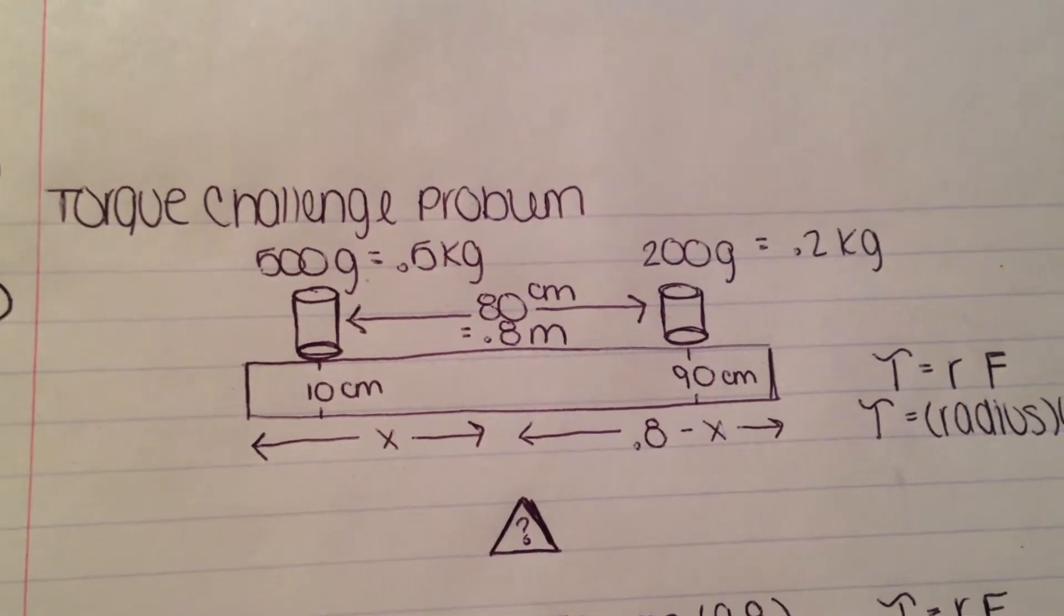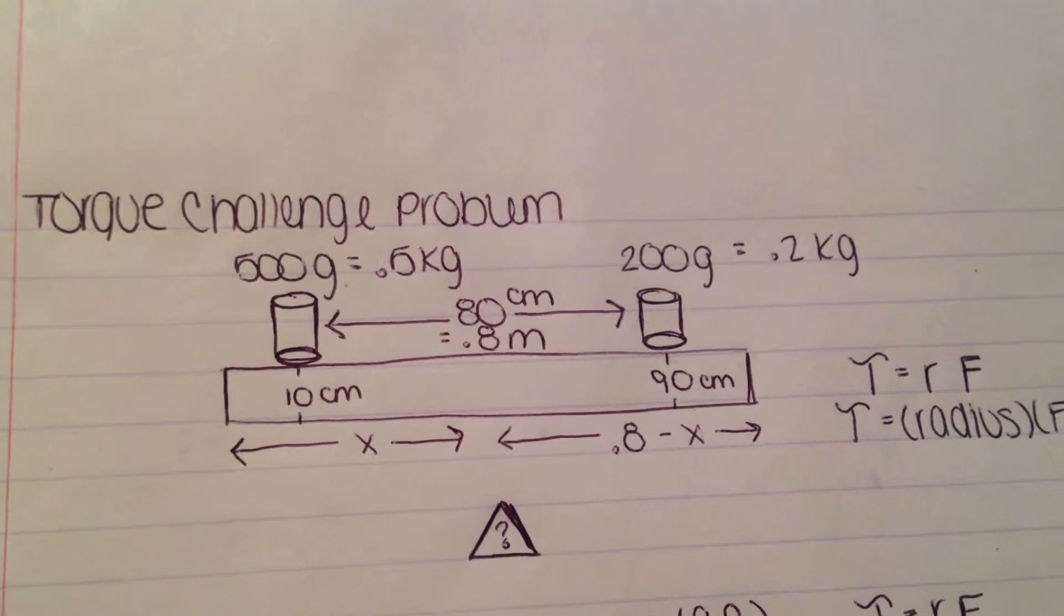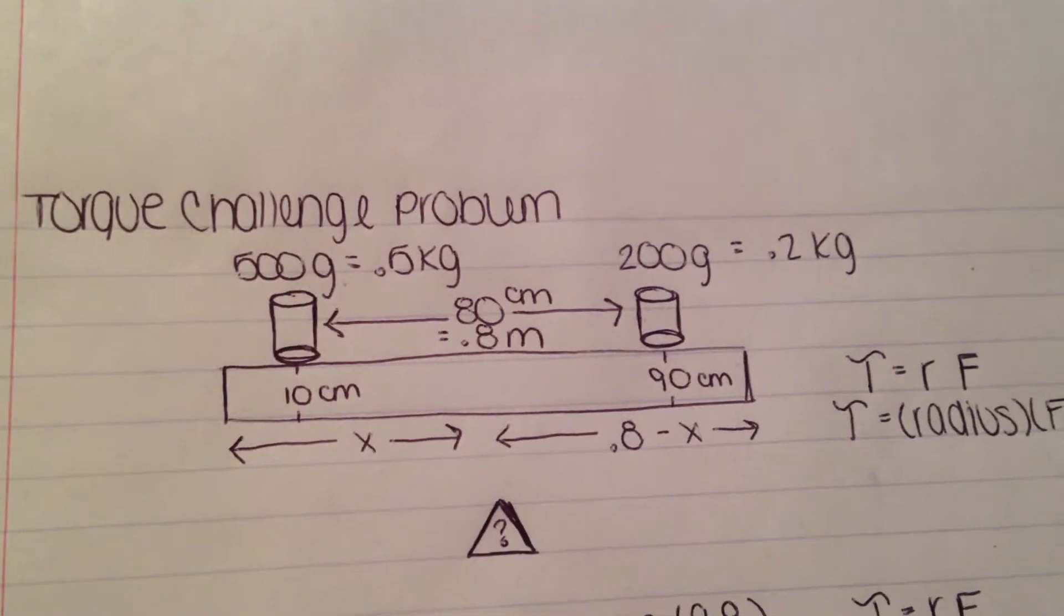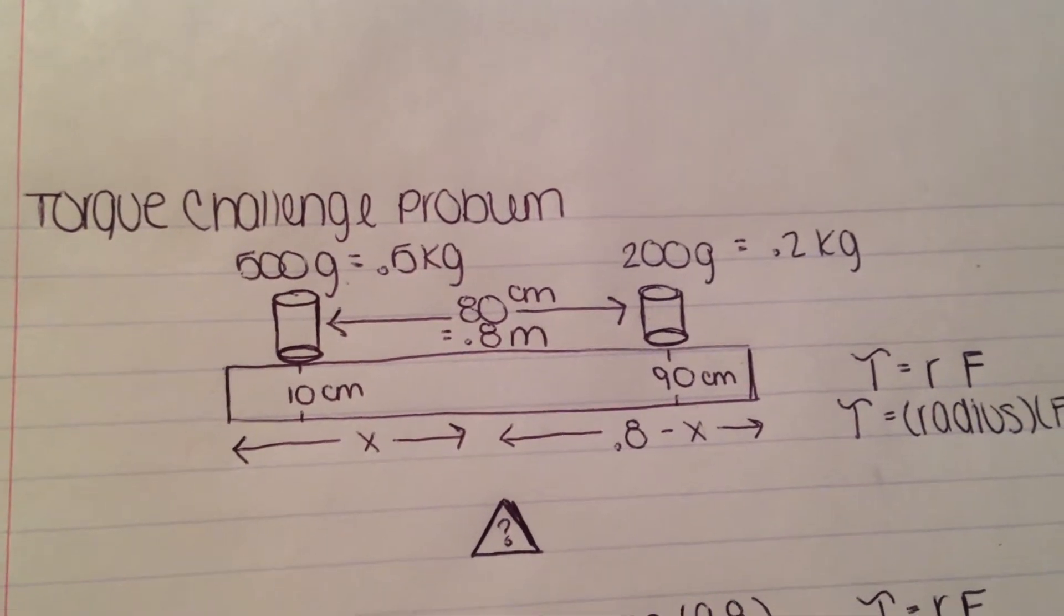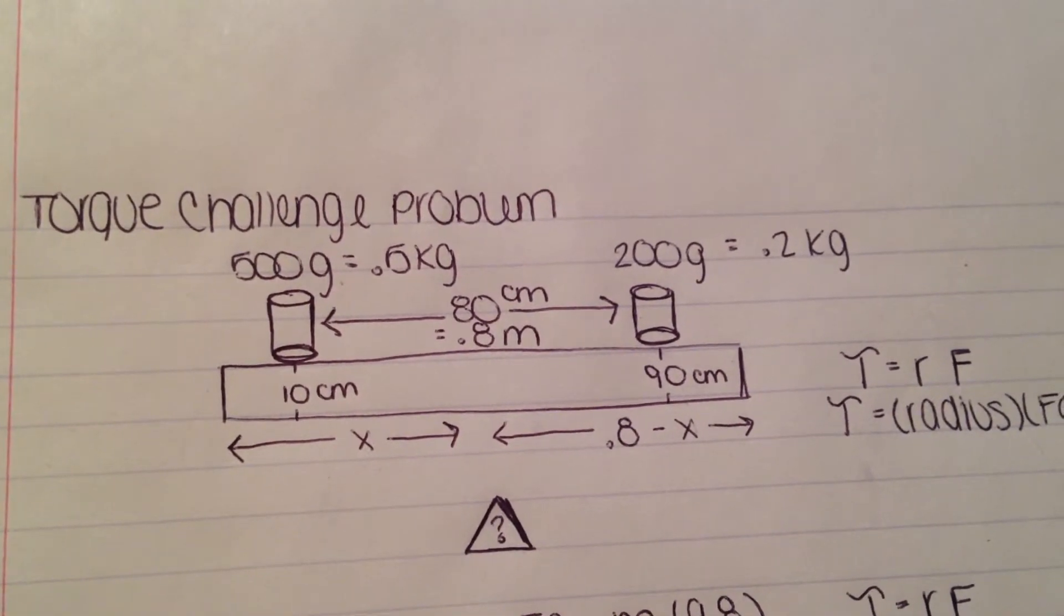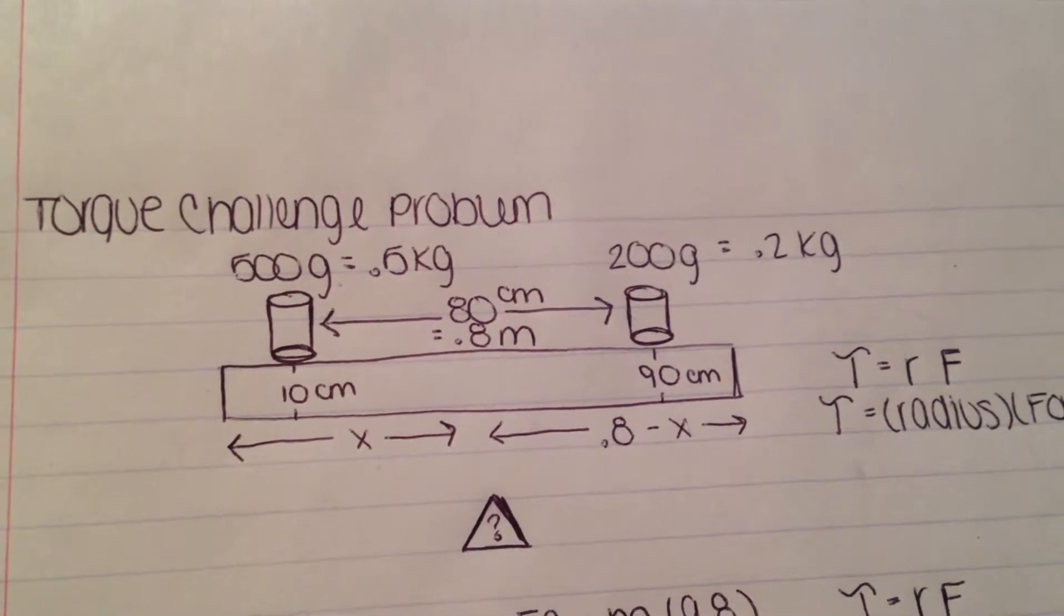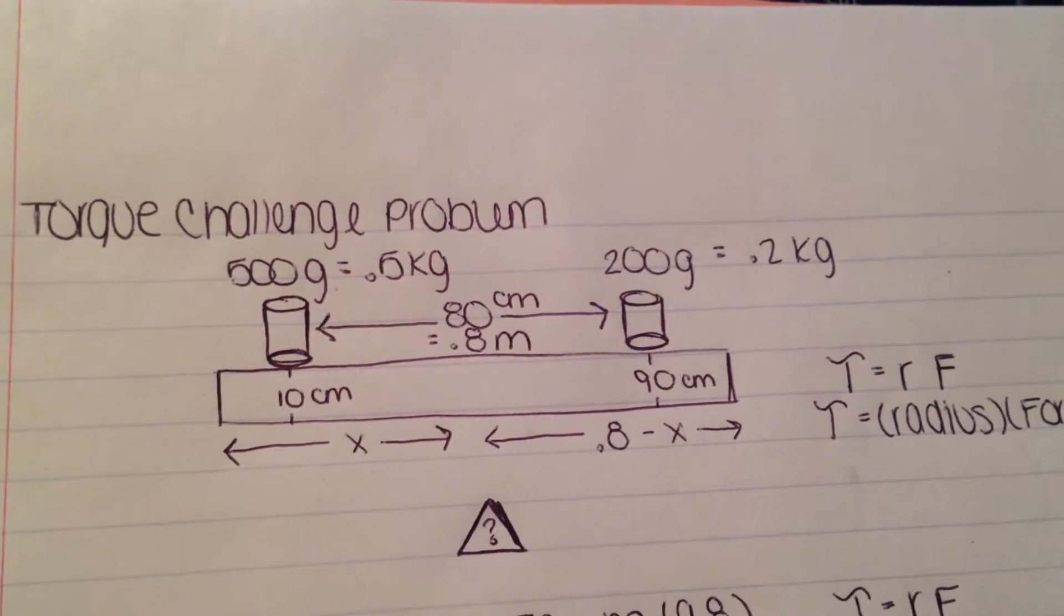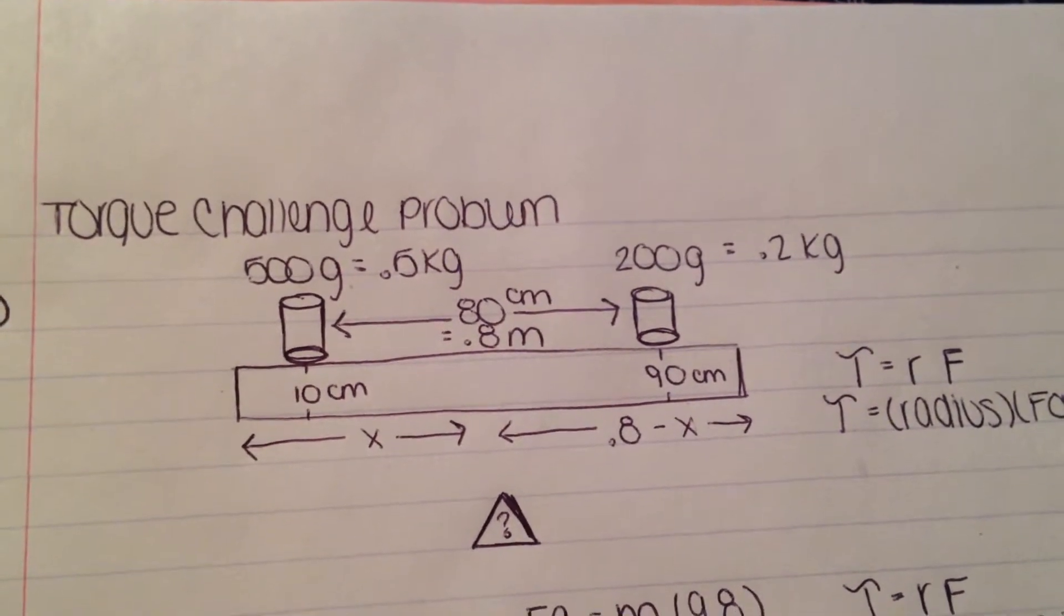The meter stick has two weights. The 500 gram mass is placed at the 10 centimeter mark, and the 200 gram mass is placed at the 90 centimeter mark. The support will be somewhere in between both of them. As a substitute for the radius from the 500 gram mass to the support, you can use the variable x. Since the weights are 80 centimeters apart from one another, you use 0.8 minus x for the radius from the 200 gram mass to the center support.